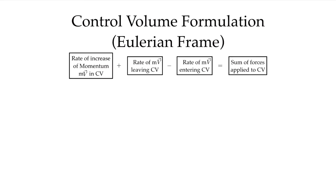When we go to a control volume formulation, we have to realize that we have to think about what's coming in and out of the control volume. So our Newton's second law, expressed in words in terms of my control volume, is the rate of increase of momentum, mass times the velocity mv, in the control volume